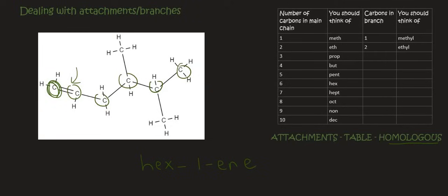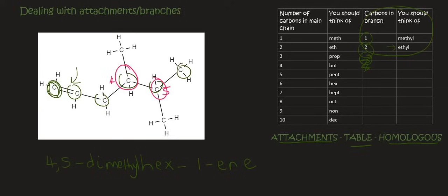We've looked at the table and the homologous series — it's an alkene. Now we need to look at the attachments. We've got attachments on carbon number 4 and carbon number 5. We don't worry that the attachment numbers are high because we're naming from the side closest to the functional group. Each of those branches on carbons 4 and 5 is called a methyl — one carbon in the branch means methyl, two means ethyl. Because there are two of them, we use the word dimethyl.